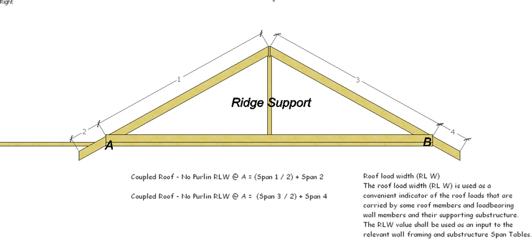We throw in a ridge support, then again for A it's span 1 divided by 2 because now half the load has been carried by our ridge support, so it's divided by 2 plus span 2 give us the RLW at A. And for B it's going to be span 3 divided by 2 plus span 4 which is our overhang to give us the RLW at B.